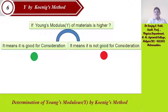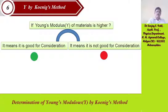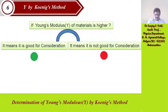How strong is the material? Up to what extent does it have stiffness? That is to be measured and found. With the help of various methods, one of them is Koenig's method, which we have used in this experiment to find Young's modulus of the material given in the form of a beam.